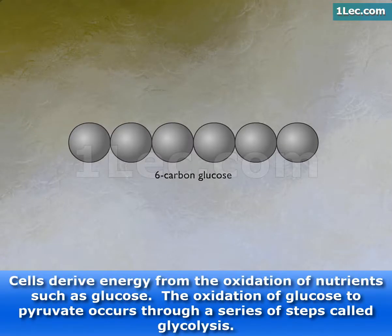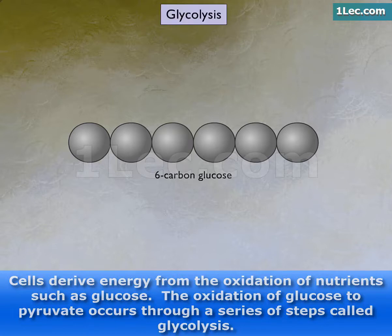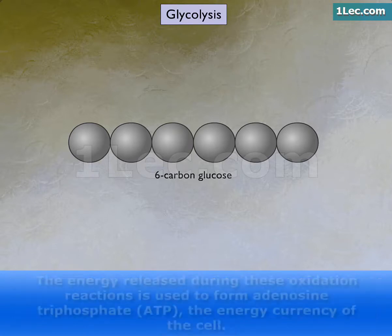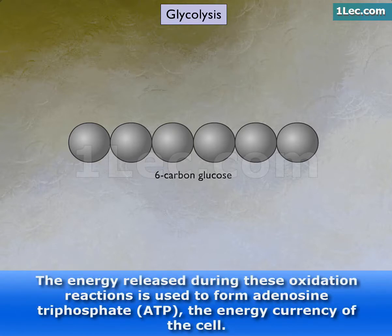Cells derive energy from the oxidation of nutrients such as glucose. The oxidation of glucose to pyruvate occurs through a series of steps called glycolysis. The energy released during these oxidation reactions is used to form adenosine triphosphate, ATP, the energy currency of the cell.